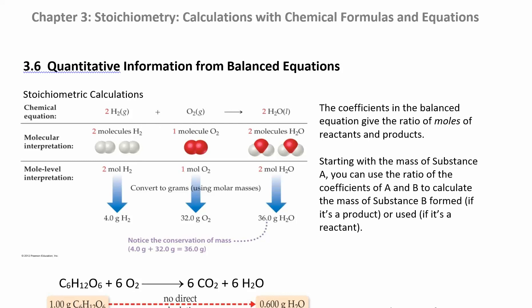Now we can look at some stoichiometry. In this process we're going to compare the amount of substance of some reactants to products, or basically comparing things within the reaction. If you interpret the chemical equation, you can think about it as molecules — two molecules of hydrogen react with one molecule of oxygen to make two molecules of water — or you can think about it on a mole scale. There are 6.02×10²³ molecules in one mole, so it's easier to say two moles of hydrogen react with one mole of oxygen to make two moles of water.